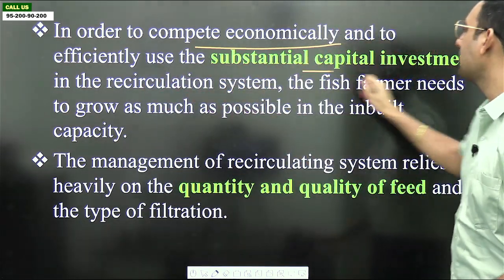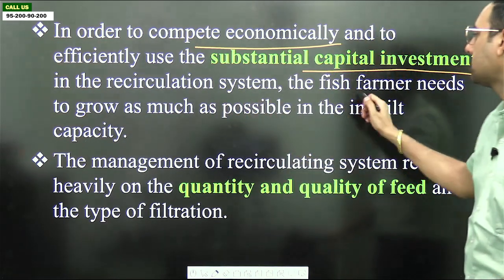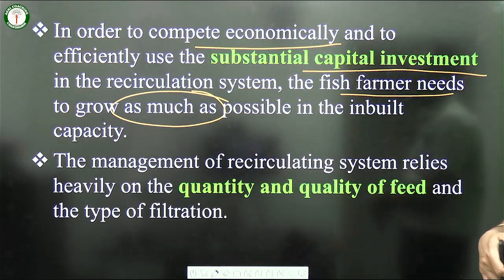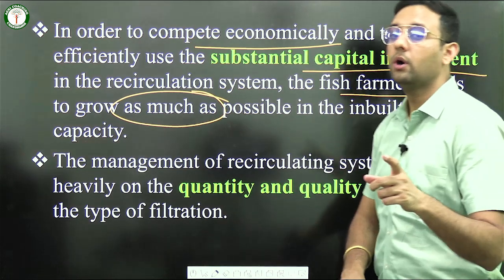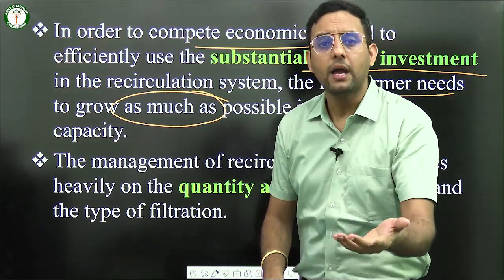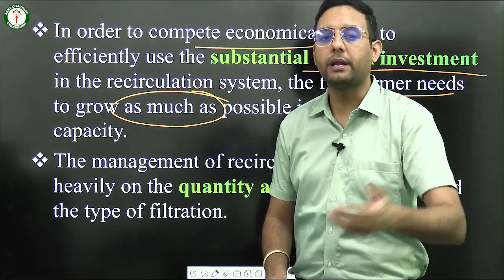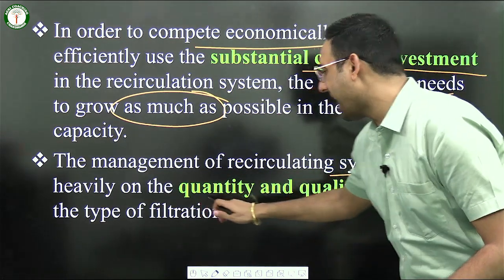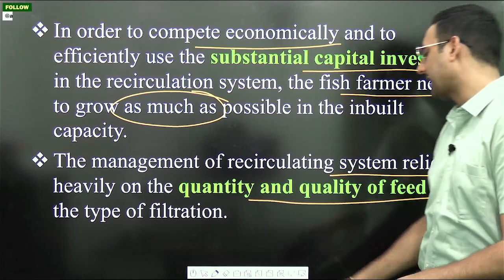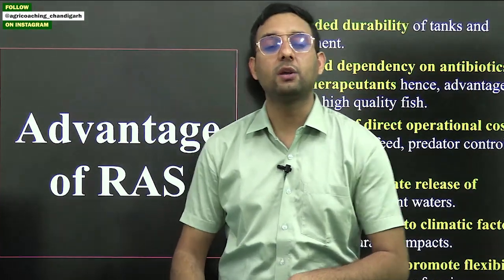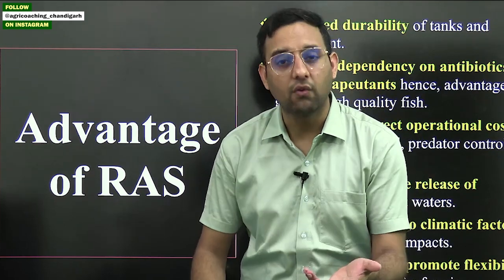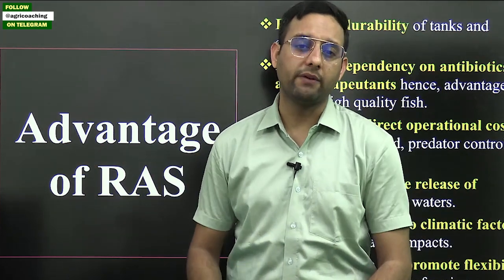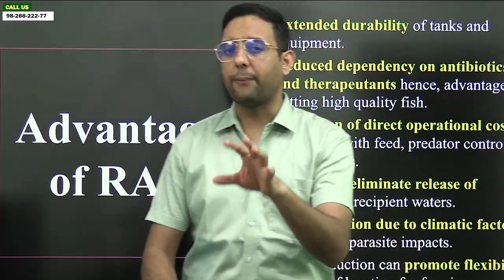To compete economically and efficiently use the substantial capital investment, the fish farmer needs to grow as much fish as possible within the installed capacity. Management of the recirculatory system relies heavily on the quantity and quality of feed and the type of filtration — how well the water is cleaned and how high the protein content of feed is for maximum productivity.